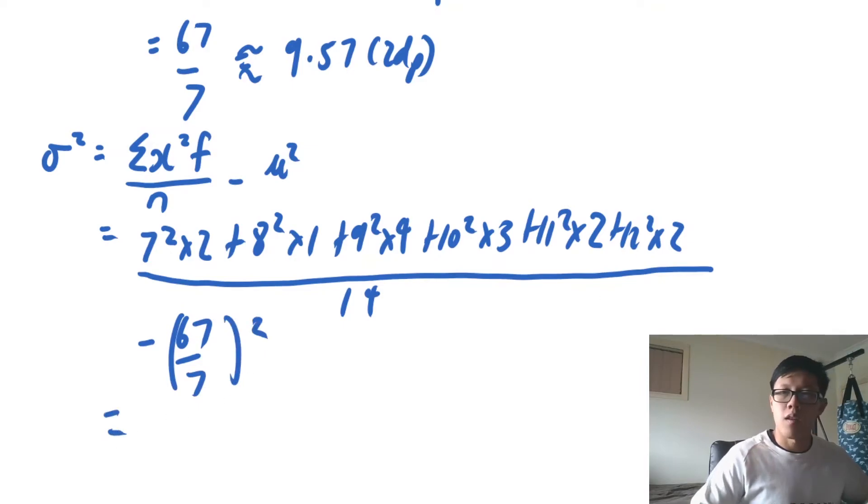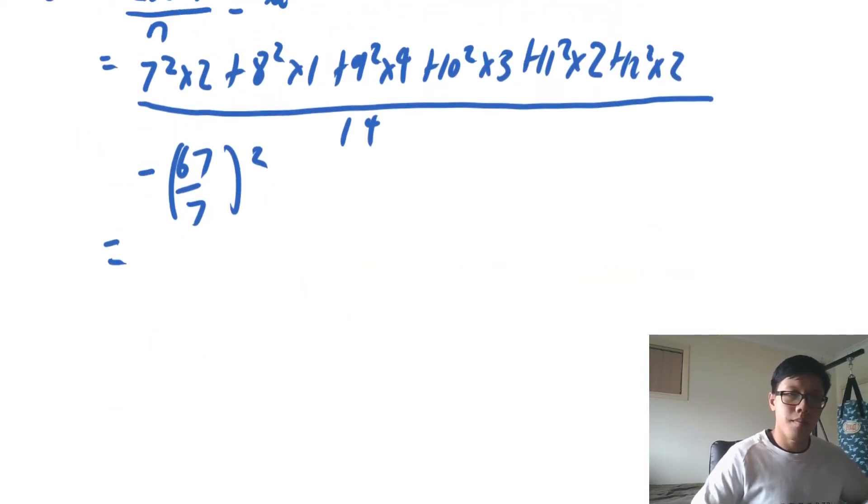And I'm going to chuck that into the calculator. 8 squared times 1 plus 9 squared times 4, 10 squared times 3 plus 11 squared times 2 plus 12 squared times 2 on 14 take away 67 on 7 squared.